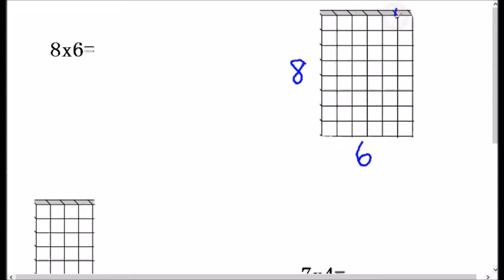So I'm going to break this up. I want to break it up here. The reason I want to break it up here is because I know what 8 times 5 is. And so if I break it there, this rectangle right here is still 8 wide, but it's 5 long instead of 6. And then this is 1 long. So 8 times 5, I know that one already. It's 40. And then 8 times 1 is 8.